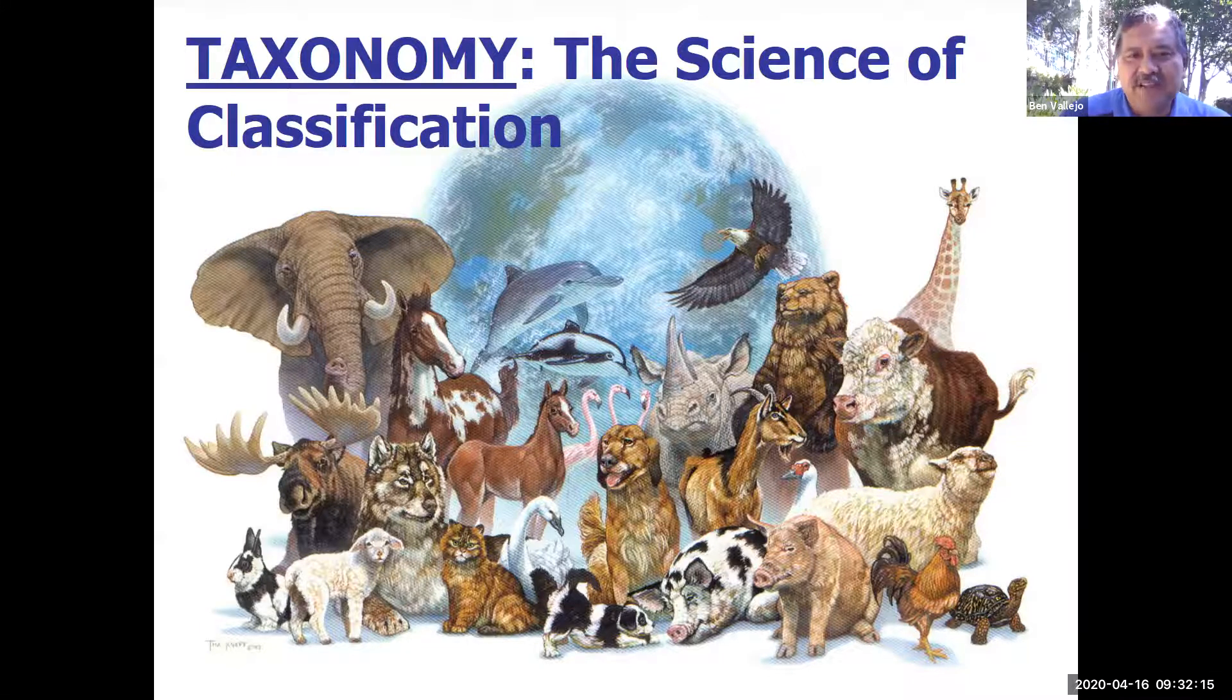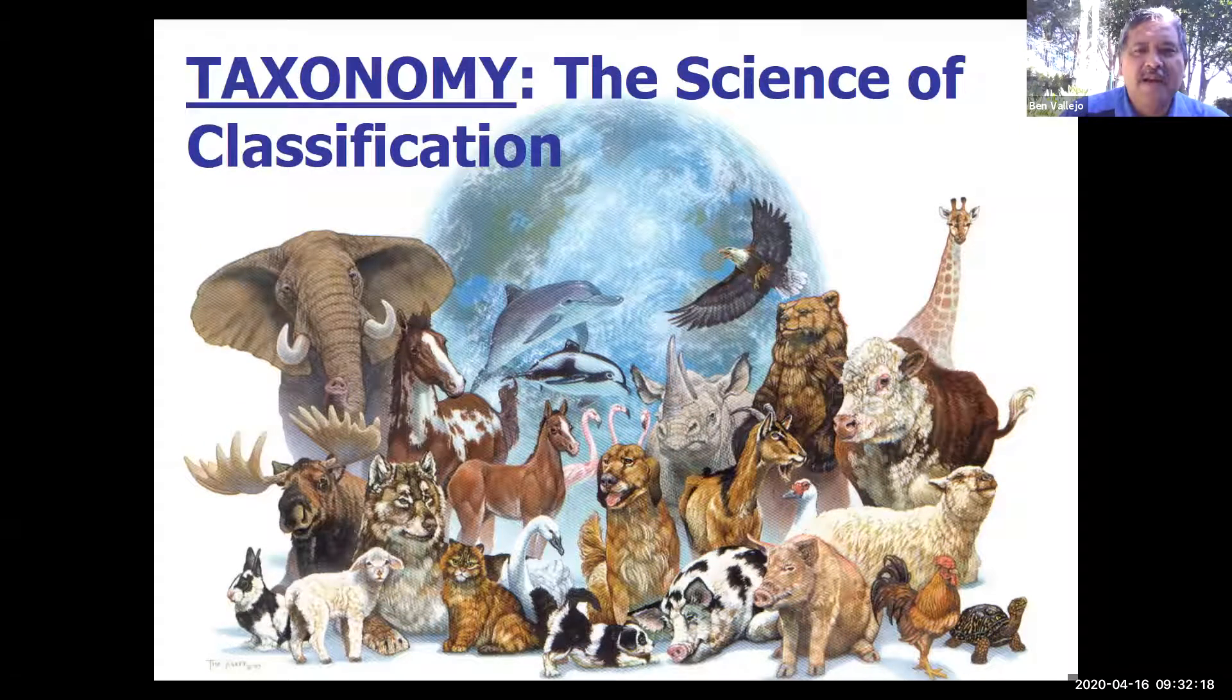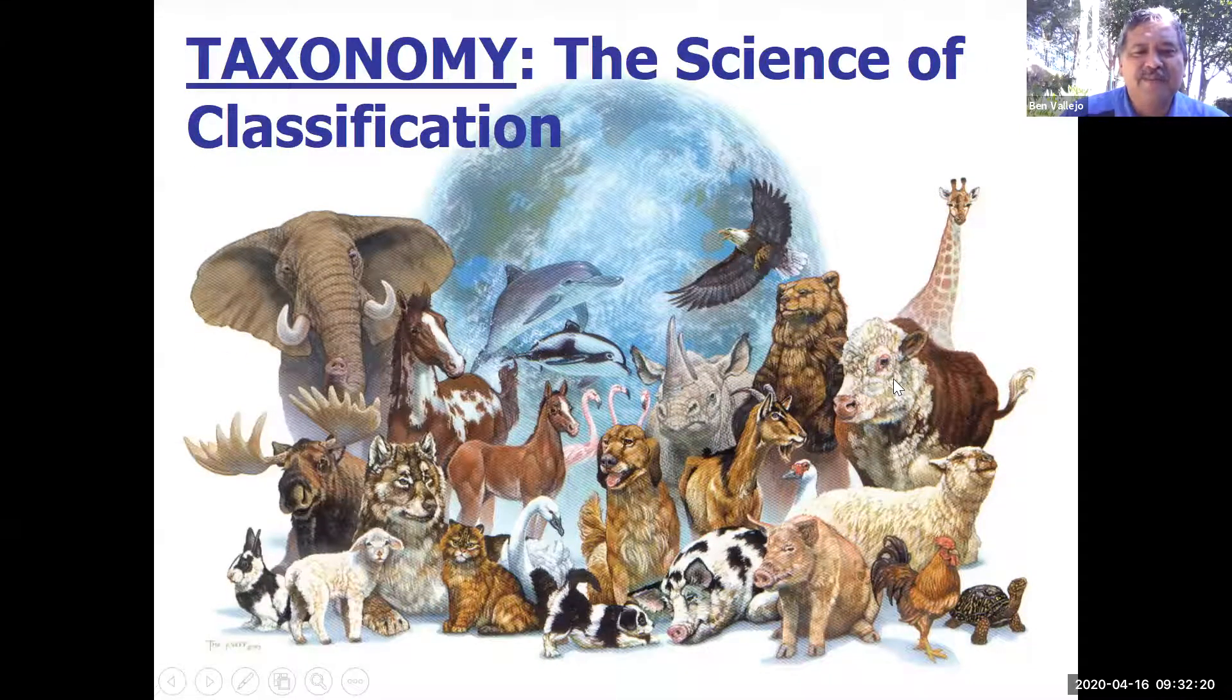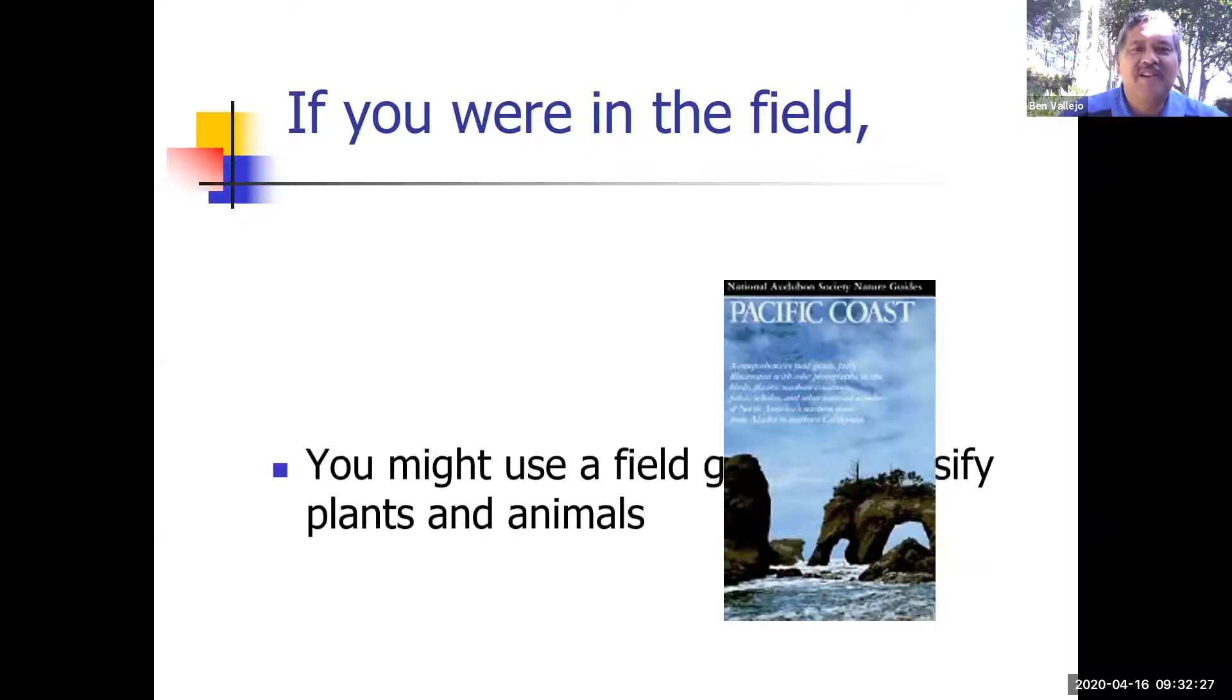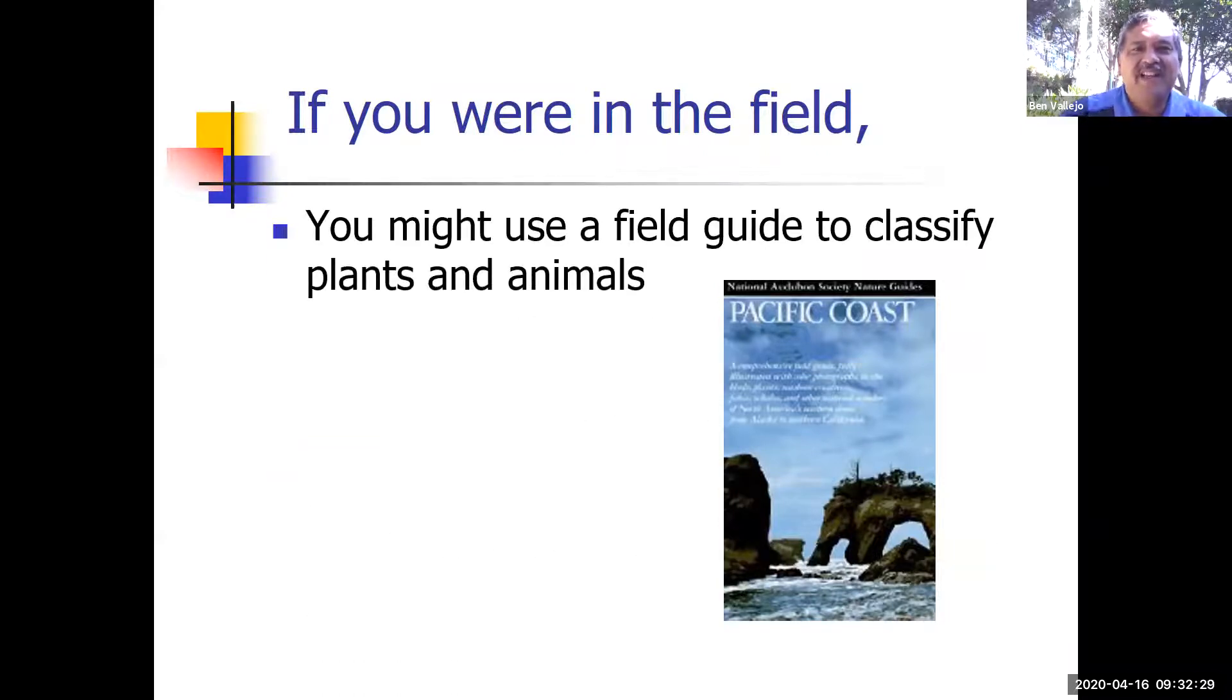If you were in the field, you might use one of these—a field guide. You could use a field guide to classify plants and animals. This is one of my favorite field guides: the Pacific Coast field guide by the National Audubon Society. I have this book and I have dropped it into the ocean at least three different times.